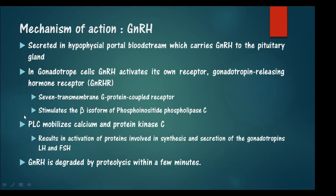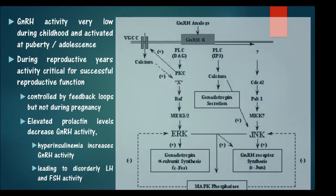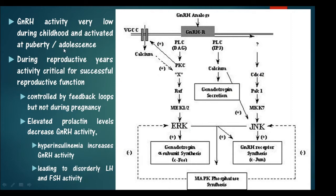Phospholipase C mobilizes calcium and activates protein kinase C, leading to activation of several proteins that ultimately cause the synthesis and secretion of LH and FSH. GnRH is degraded by proteolysis within a few minutes because continuous stimulation is not needed. GnRH activity is very low during childhood and is activated at puberty. During the reproductive years, GnRH activity is critical for successful reproductive function, and it is controlled by feedback loops, though during pregnancy these feedback loops do not come into action.